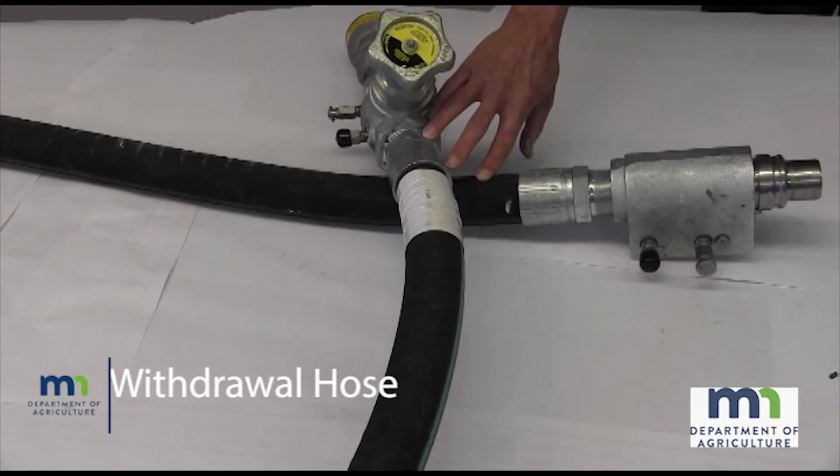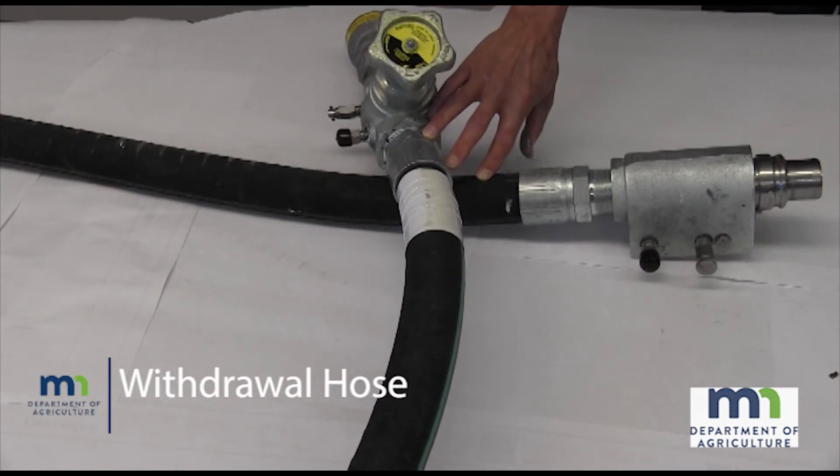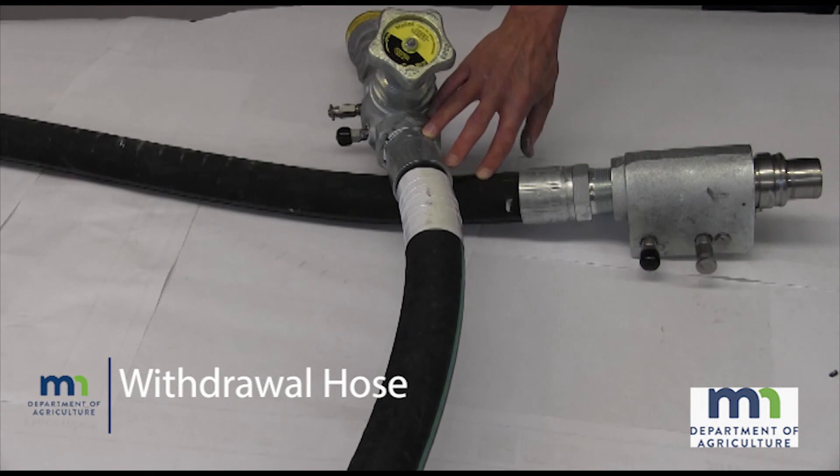And the withdrawal hose. This is the hose that is installed between the nurse tank and the male segment or half of the breakaway coupling device on the application unit.